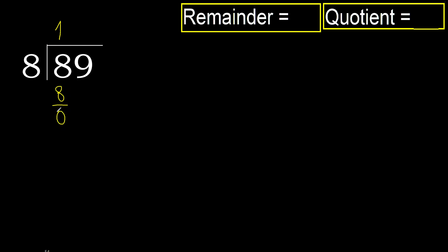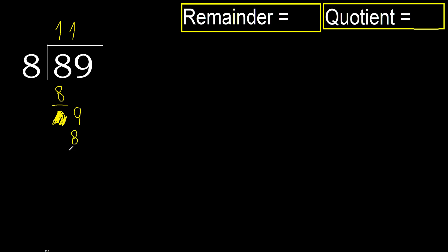Subtract 0. Next, eliminate 0 on this side — bring down 9. 8 multiplied by 2 is 16, which is greater. Multiply by 1 is 8, which is not greater. Subtract 1.